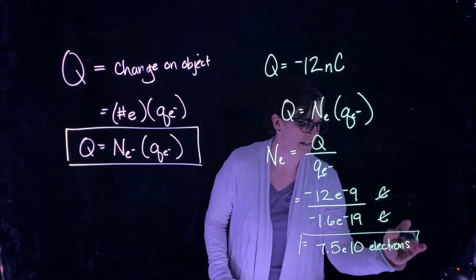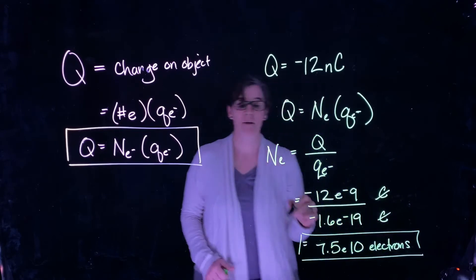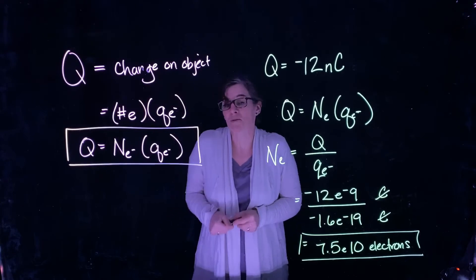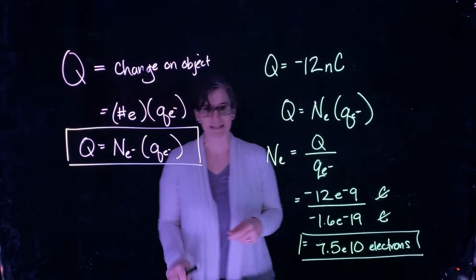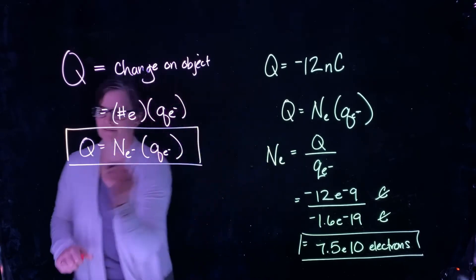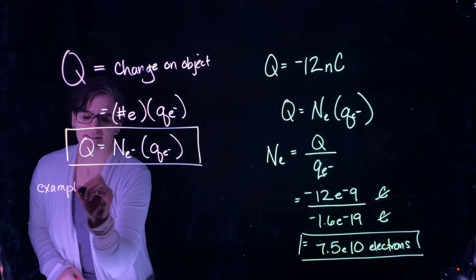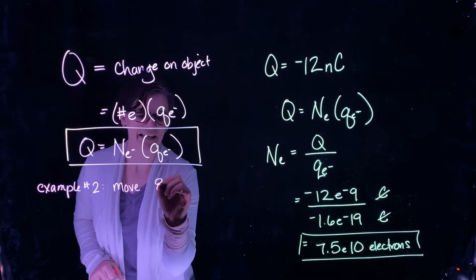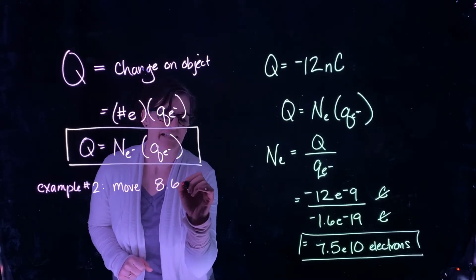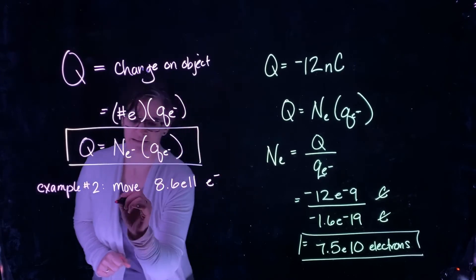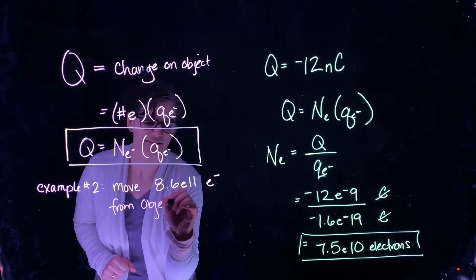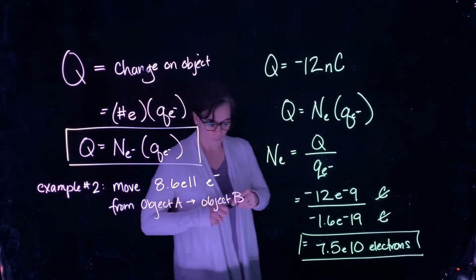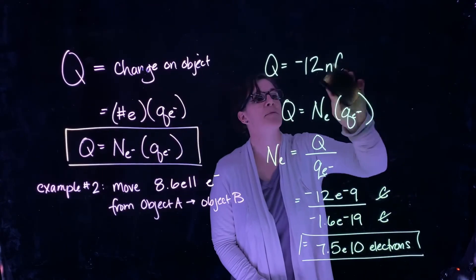So we can use this relationship to determine the number of electrons on a charged particle. Now let's do another example. Let's imagine that we move 8.6 times 10 to the 11th electrons from object A to object B. What is the charge on object A?